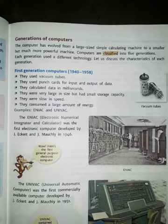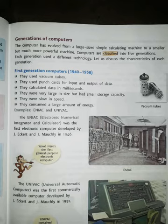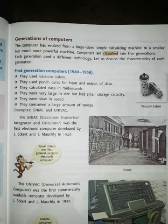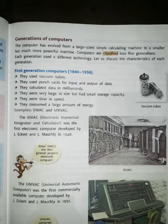In that time there were two electronic computers: ENIAC - Electronic Numerical Integrator and Calculator - and UNIVAC - Universal Automatic Computer. These computers were developed by J. Eckert and John Mauchly. ENIAC was developed in 1946 and UNIVAC was also developed by these two engineers in 1951.